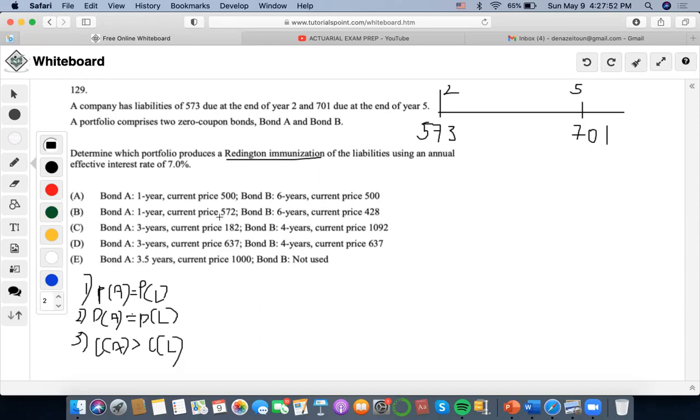So let's first solve for the present value of the liability. That would be 573 discounted two years plus 701 discounted five years at seven percent. If I take my calculator, I'm going to do 573 times 1.07 to the negative 2 plus 701 times 1.07 to the negative 5, so the present value is going to be one thousand.